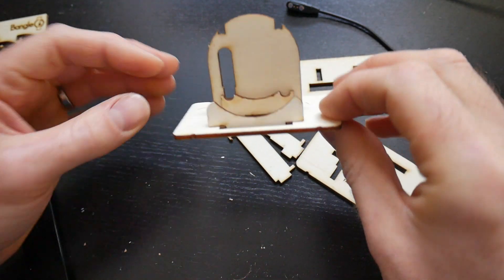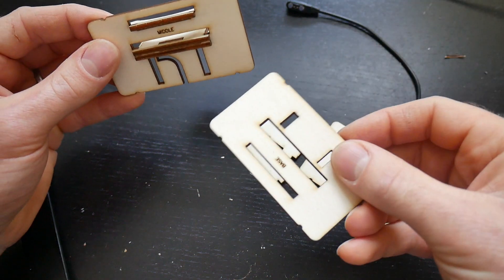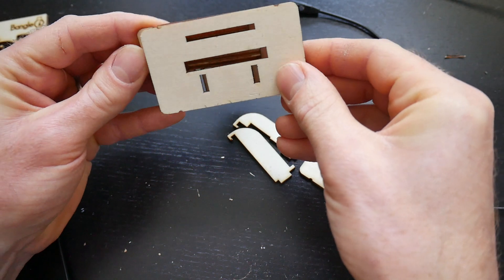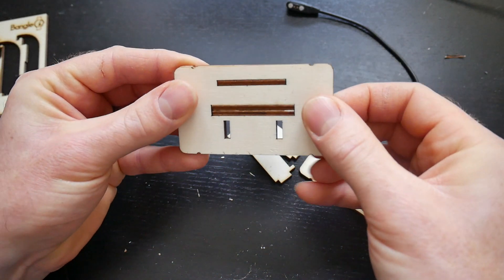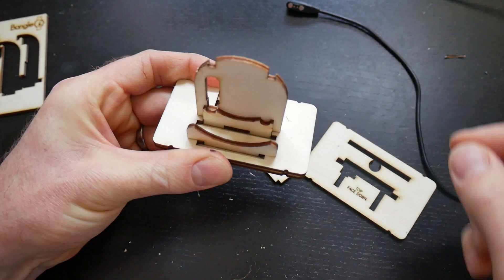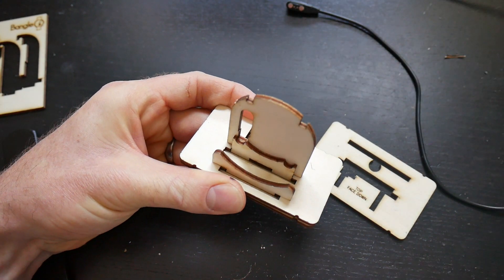Once you've got those three in, you can take the base plate, flip it over again so the text is hidden and just slide it over those to hold them all in place. So now you've got the main Bangle.js holder.